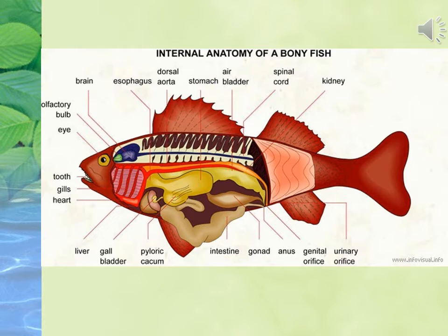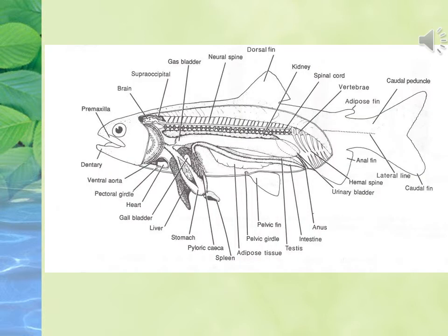This lecture will also help to understand the anatomy of the bony fish, which is the second practical of our content. This picture shows the internal anatomy of a bony fish, having the brain, esophagus, dorsal aorta, stomach, air bladder, spinal cord, kidney, urinary orifice, genital orifice, anus, gonad, intestine, pyloric cecum, gallbladder, liver, heart, gills, tooth, eye, and olfactory bulb. These are all the parts of the fish body mentioned in this picture.